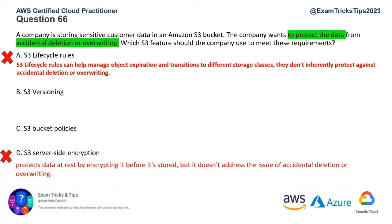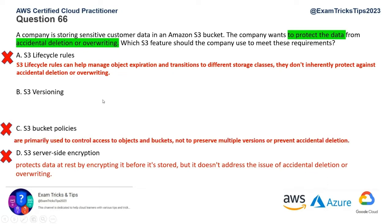Option C, bucket policies — bucket policies are used to control access to objects and buckets, not to preserve multiple versions. You can define who can access a certain bucket and who cannot, controlling access to data rather than stopping accidental deletion or override. So that's wrong as well. We've eliminated almost all wrong options, leaving us with S3 versioning, which is the correct answer.